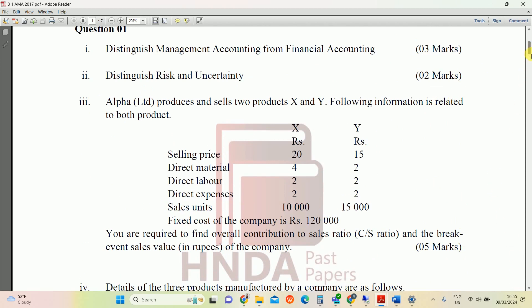The question is: Alpha Limited produces and sells two products X and Y. Following information is related to both products: selling price for both products, direct material, direct labor, direct expenses, sales units, and fixed cost for the company.